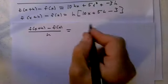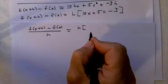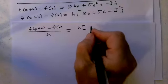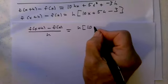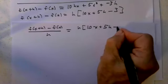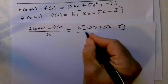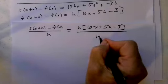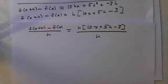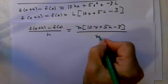Well, this h times 10x plus 5h minus 3, divided by h. And we factored out the h, so it divides out. h divided by h is 1 over 1.